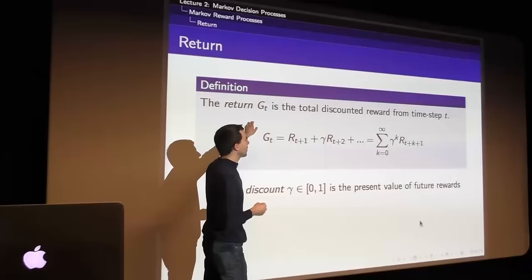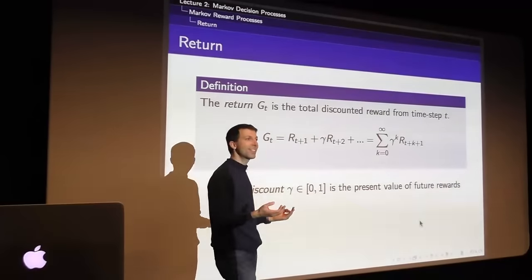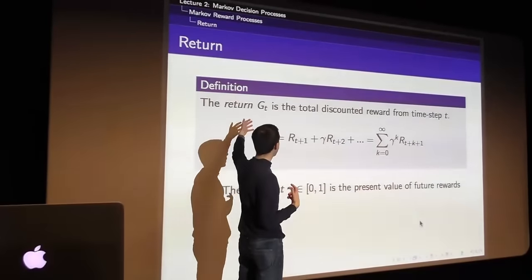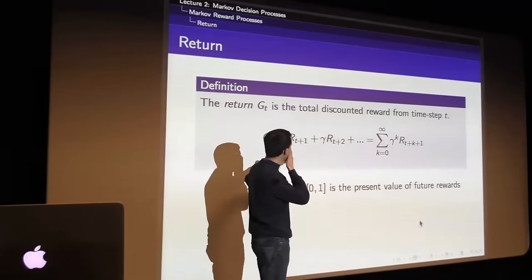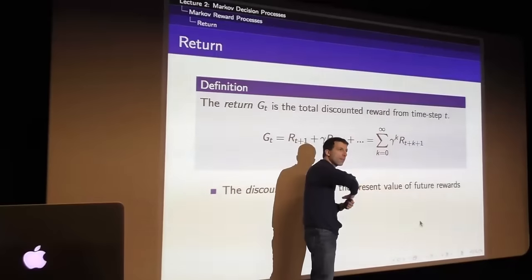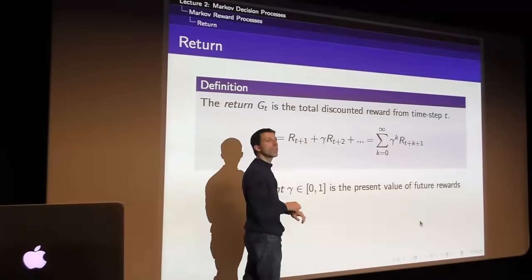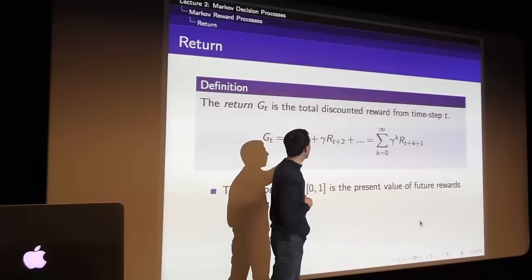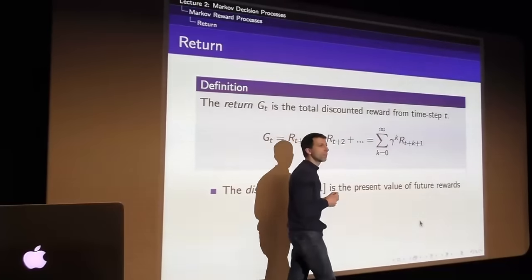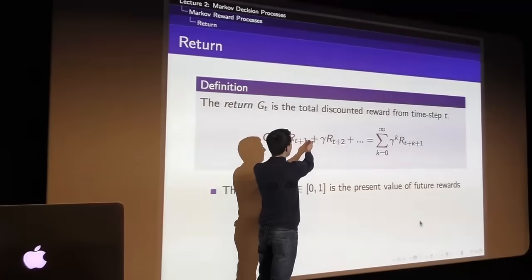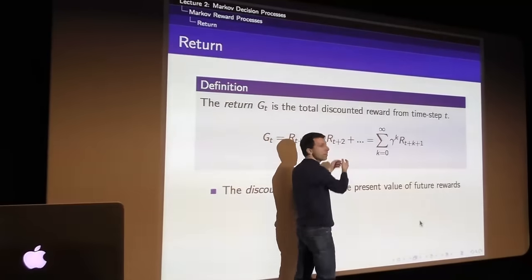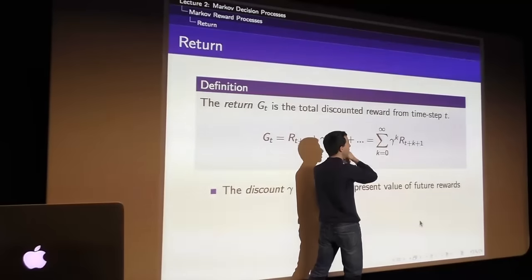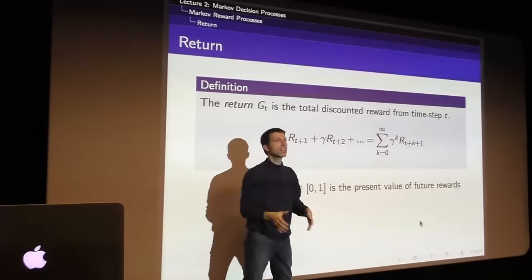We call the total accumulated reward the return G — G stands for goal. The goal of reinforcement learning is to maximize the return. The return is the reward summed over all time steps into the future, discounted by gamma at each step: immediate reward R_{t+1} plus gamma times R_{t+2} plus gamma-squared times R_{t+3}, and so on to infinity. G is random — it's one sample from the Markov reward process. We'll introduce the expectation shortly.